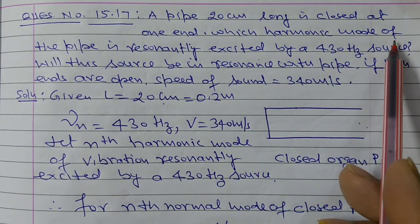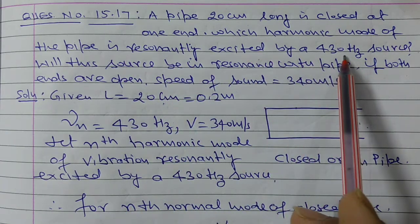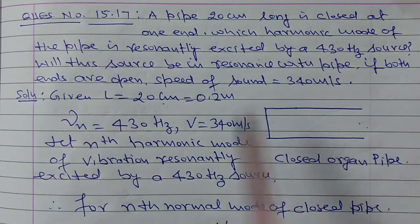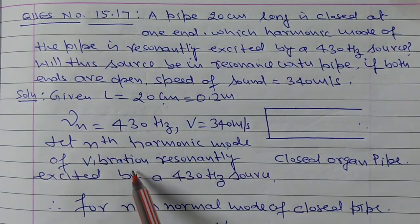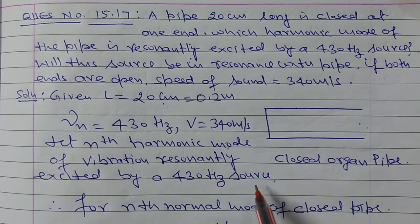We will tell which harmonic mode of the pipe is resonantly excited by a 430 Hz source. Which harmonic? We have supposed the nth harmonic mode of vibration resonantly excited by a 430 Hz source.